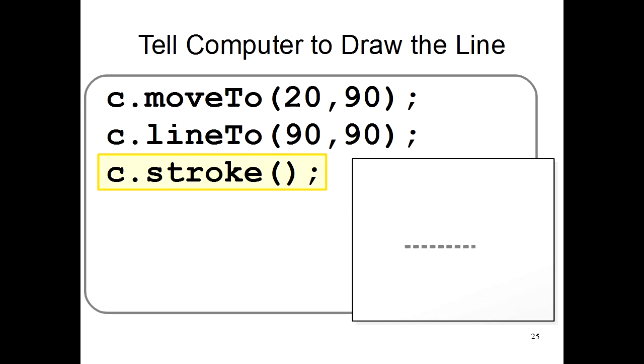Finally, c.stroke tells the computer that you actually want to draw the line now. Previously, you just said where you wanted the computer to draw a line, but the computer didn't actually draw it. With c.stroke, the computer will then draw a line over the places where you told it you wanted a line.